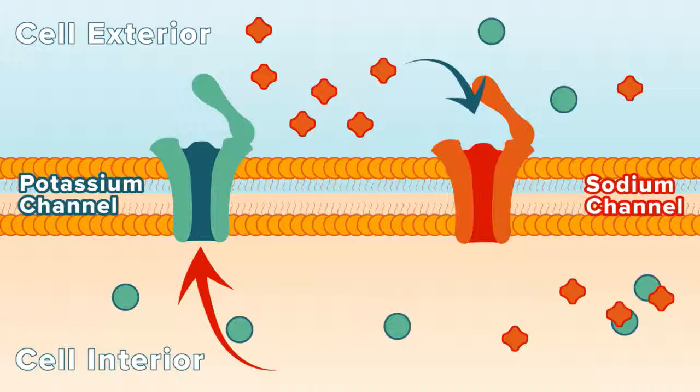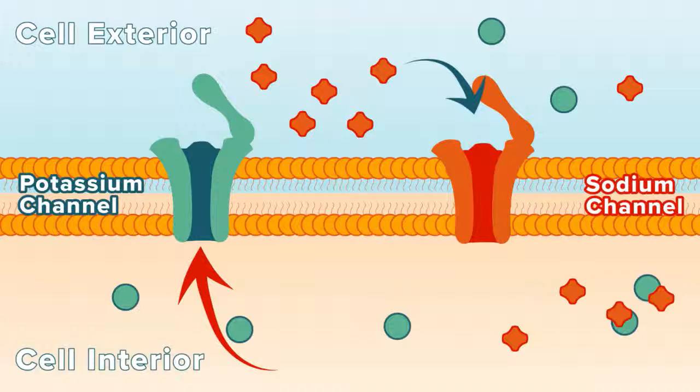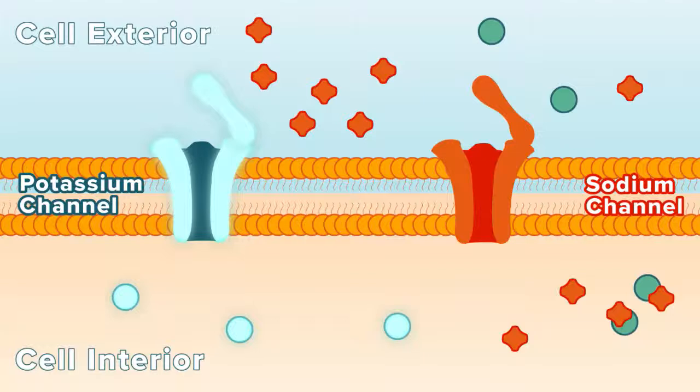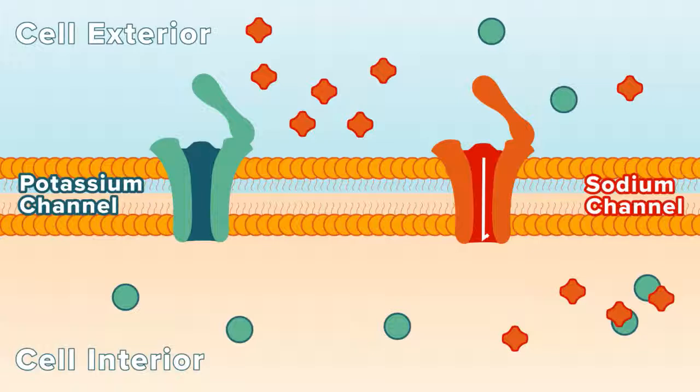You'll notice large proteins or channels that span the membrane of the axon. These channels are designed to allow ions to move back and forth across the membrane and they're specific to the ions they transport. Also note that these channels are like a one-way door moving traffic in a specific direction. The potassium channel moves potassium ions out of the cell whereas the sodium channel moves sodium ions into the cell.